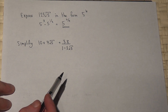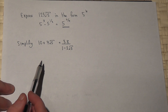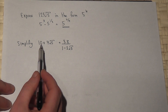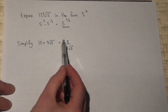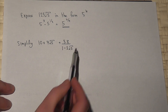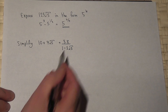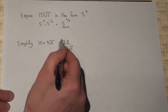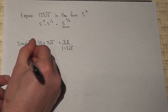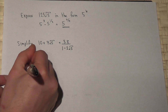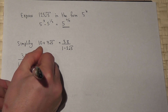In the second part, we're asked to simplify an expression with a 10, a 7 root 5, and 38 over 1 minus 2 root 5. The method here is to look at the fraction to begin with: 38 all over 1 minus 2 root 5.